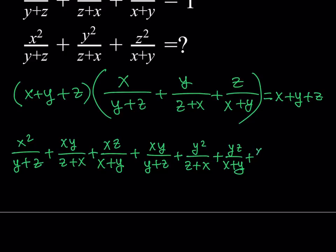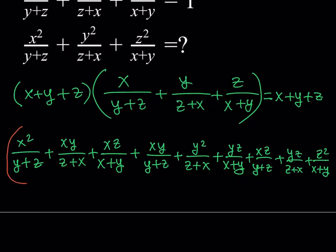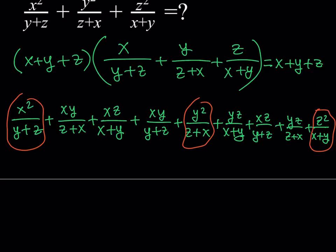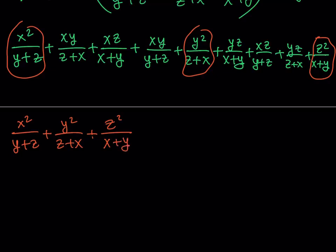When you distribute z, you get x times z over (y plus z), then y times z over (z plus x), and finally z squared over (x plus y) — again, something we're looking for. So notice that these are the terms we want: x squared over (y plus z), y squared over (z plus x), and z squared over (x plus y). That's the sum we're looking for. We've also got some extra terms, and that's perfectly fine.